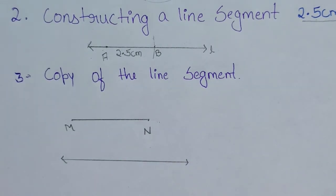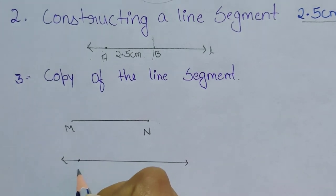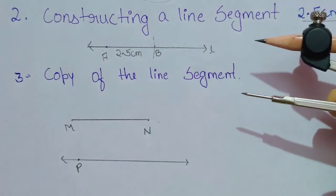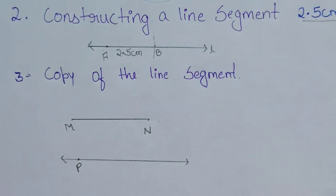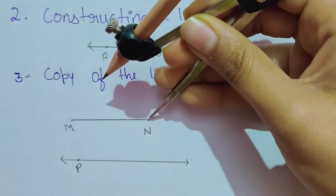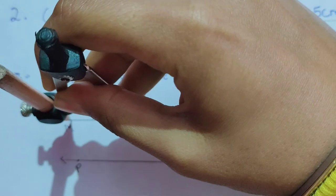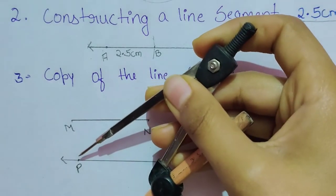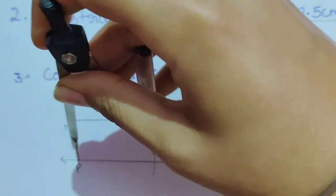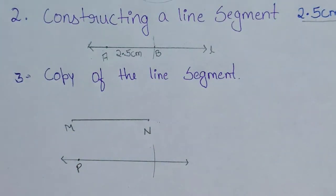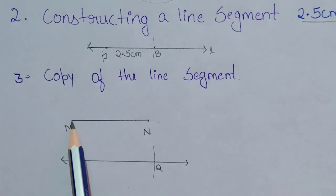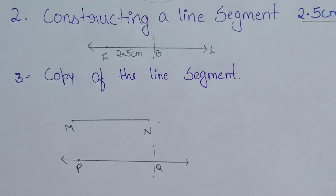Mark a point P on the new line. Instead of measuring from the scale, place the compass on one endpoint of MN and open it to the other endpoint. Then keeping the pointed part on P, cut an arc on the line — the point where the arc meets the line is Q. The length of PQ equals the length of MN.